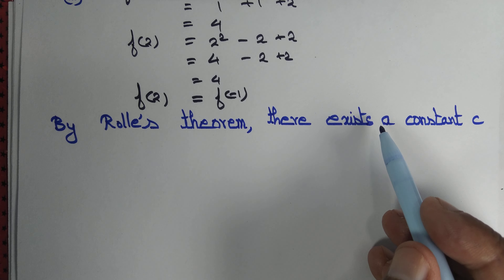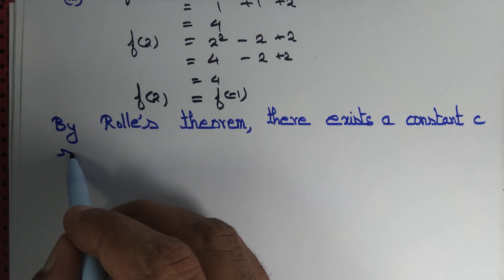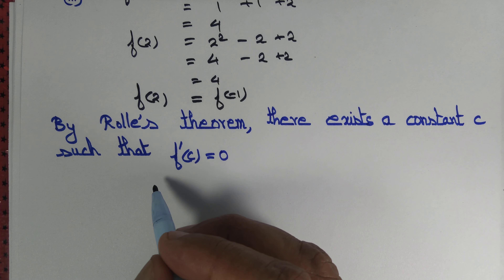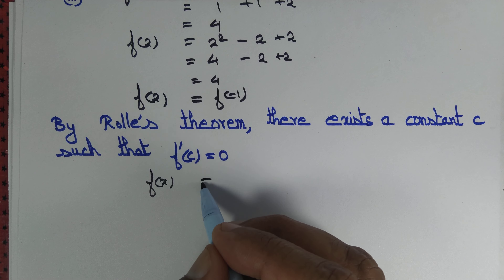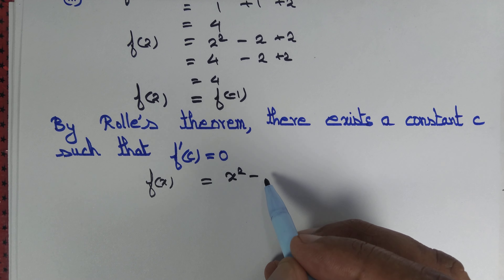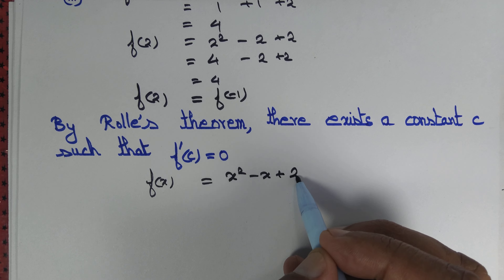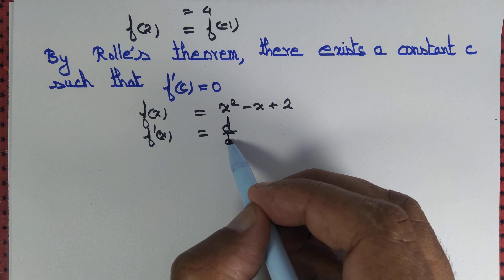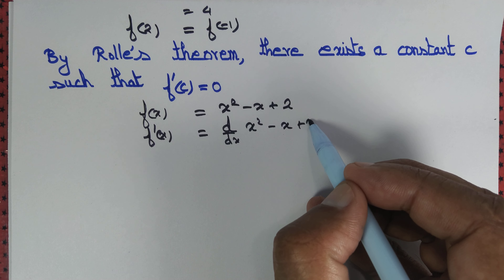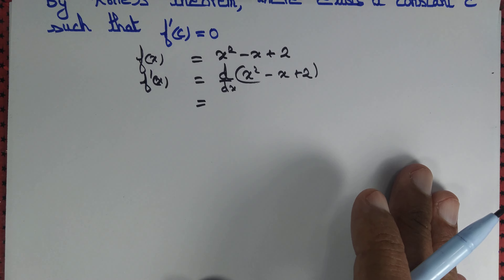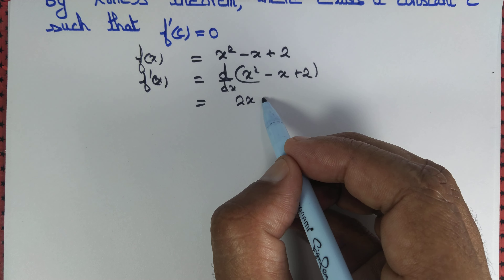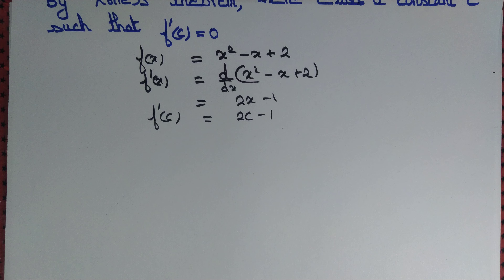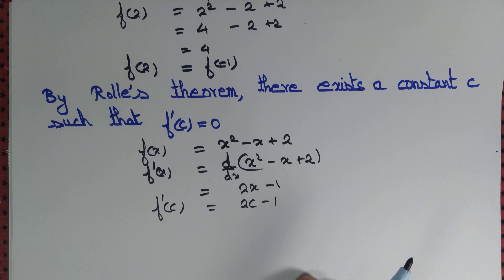By Rolle's theorem, there exists a constant c such that f'(c) = 0. Now f(x) = x² - x + 2, so f'(x) = d/dx(x² - x + 2) = 2x - 1. Therefore f'(c) = 2c - 1. We want to determine a constant c such that f'(c) = 0.